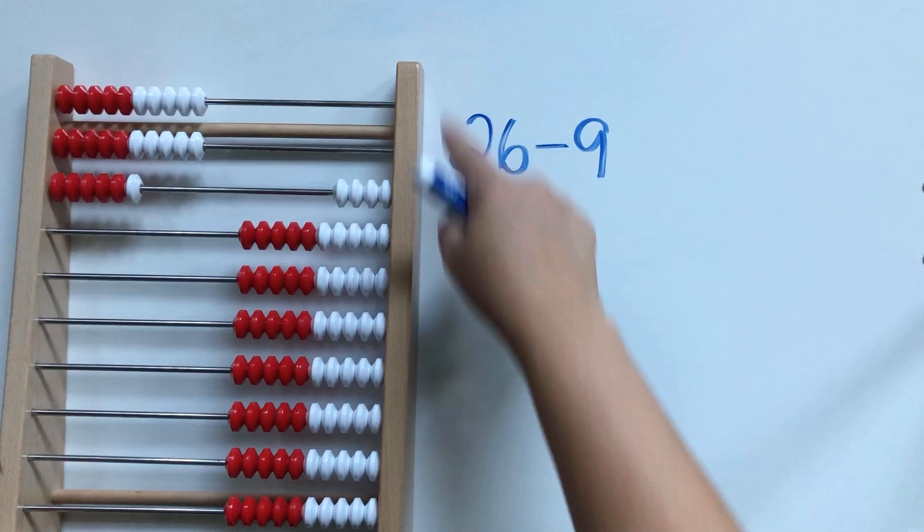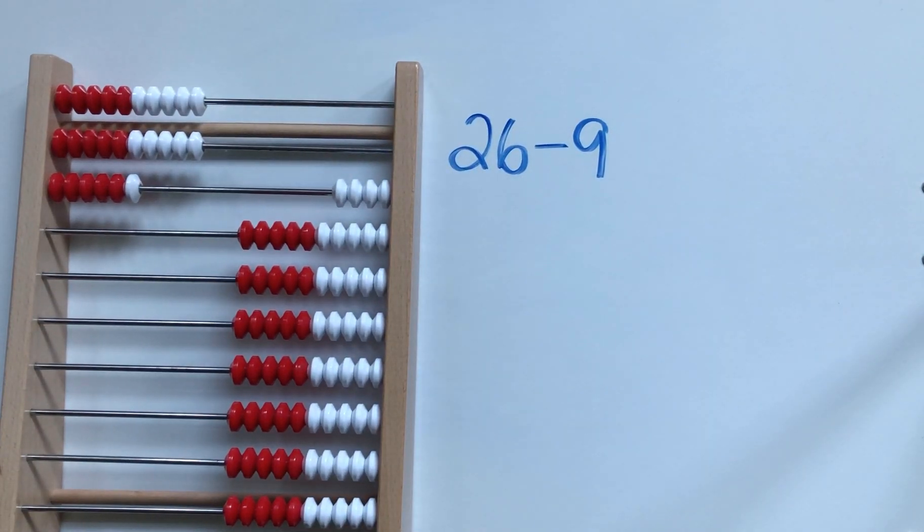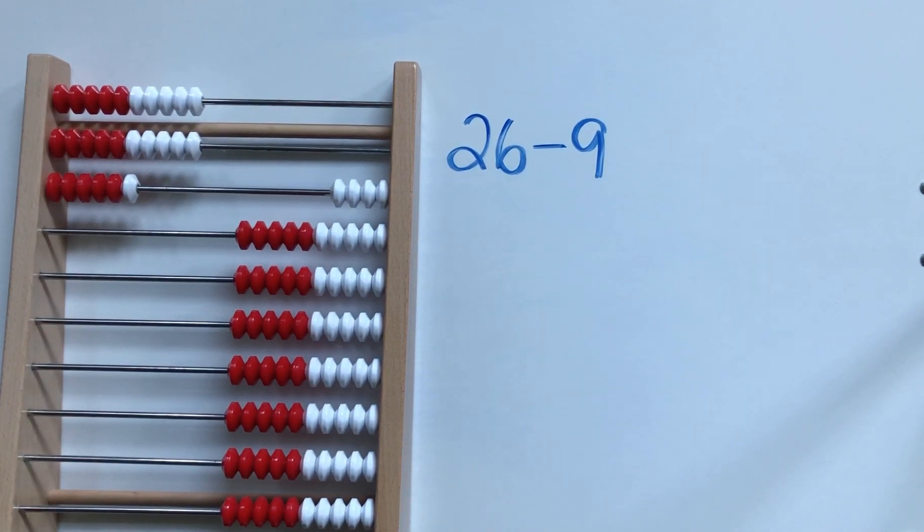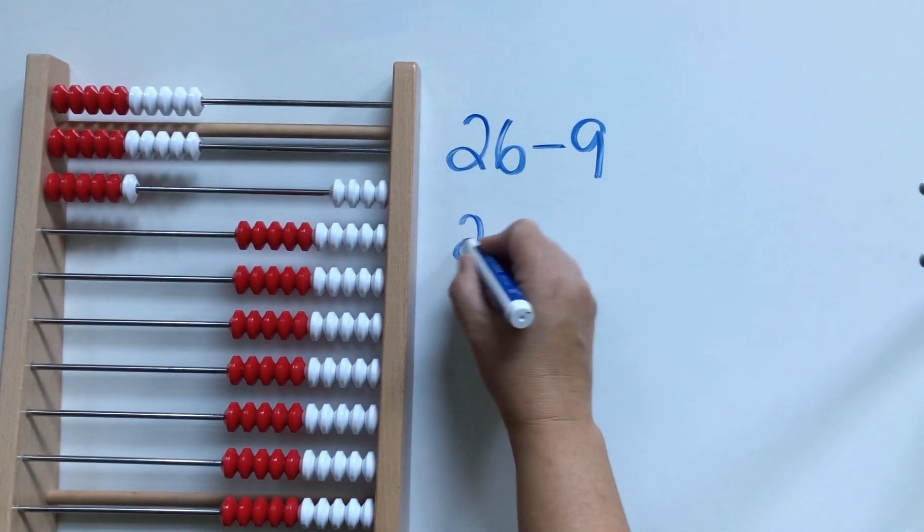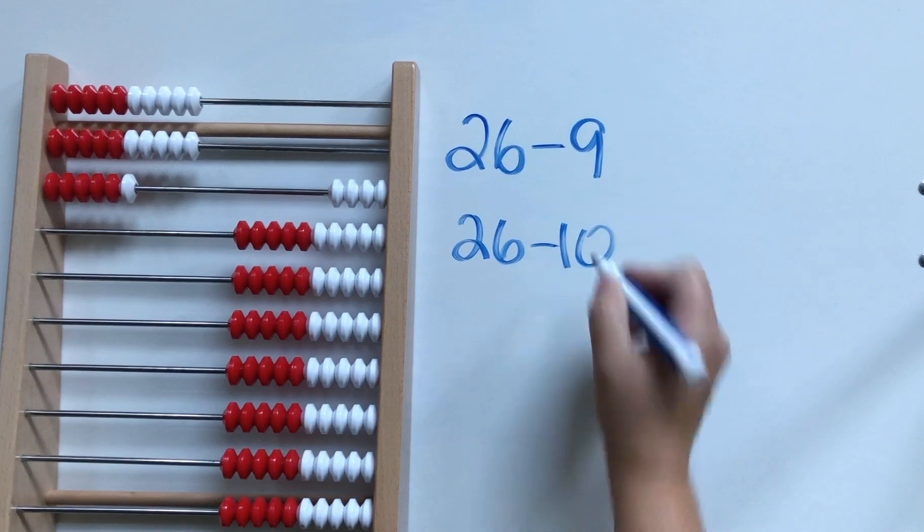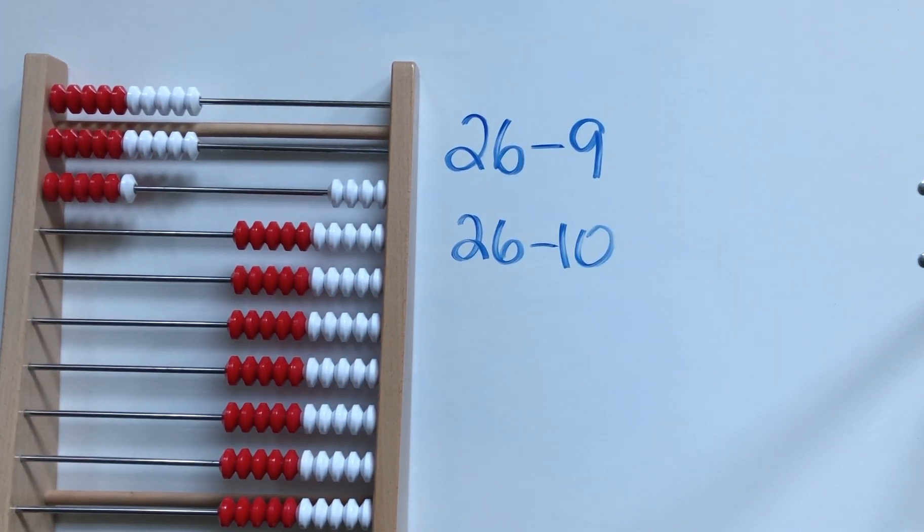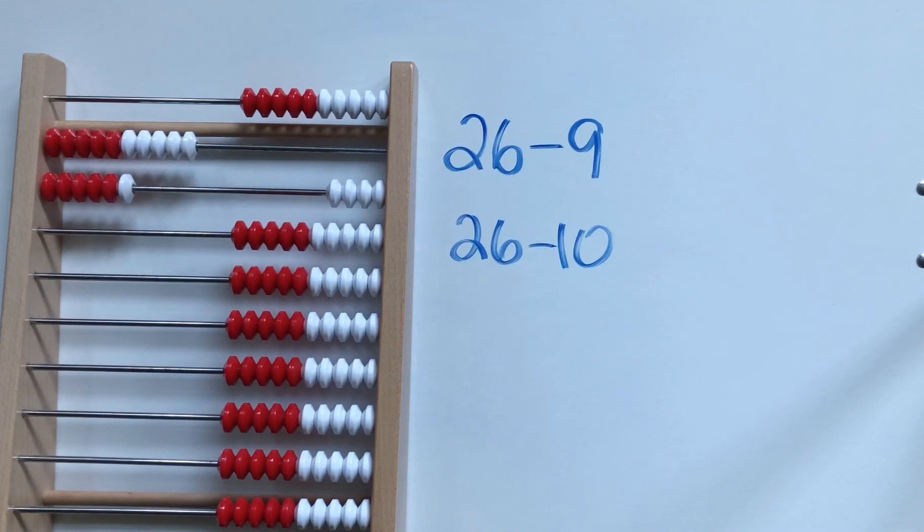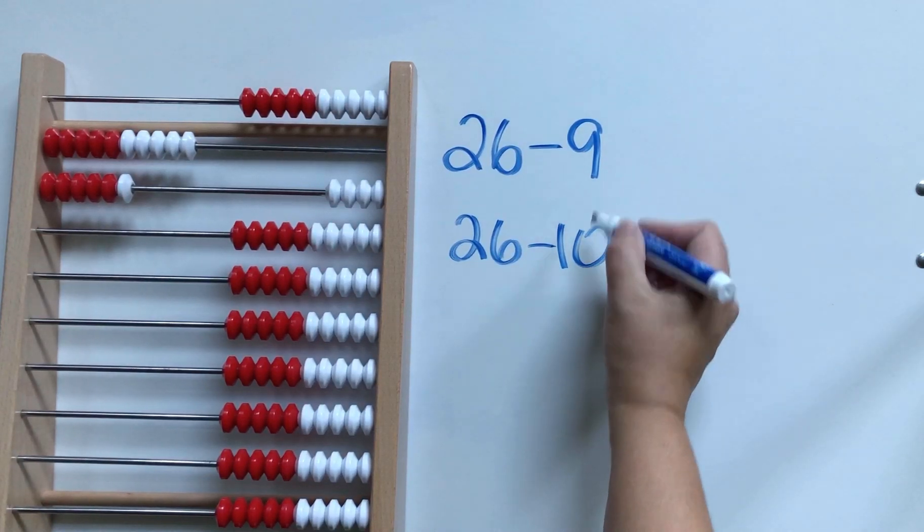So here's 26. Now what do we know about 9? We know that 9 is really close to 10, so what we could start by doing in our heads is thinking about 26 subtract 10. Now that's a lot easier. We know that that's 16.